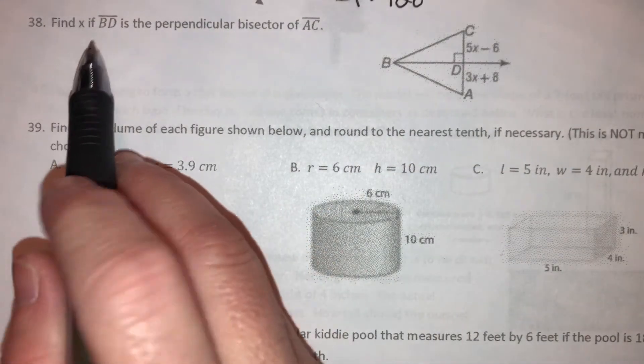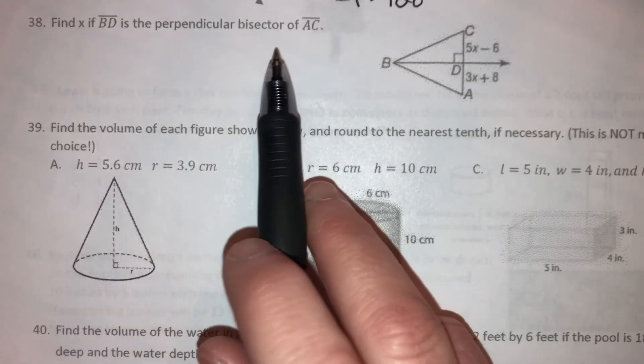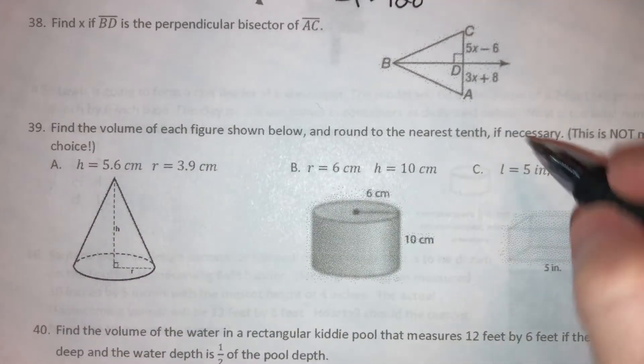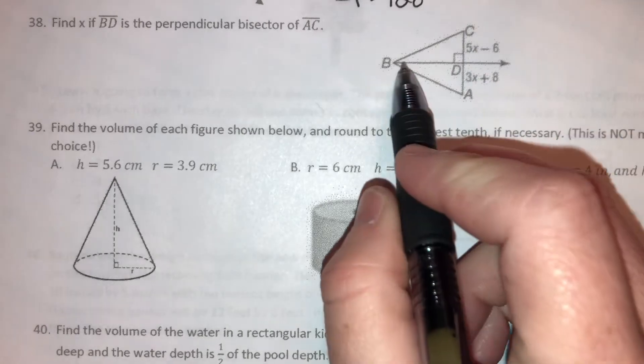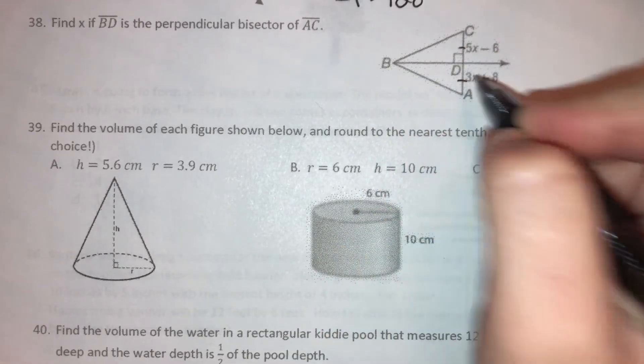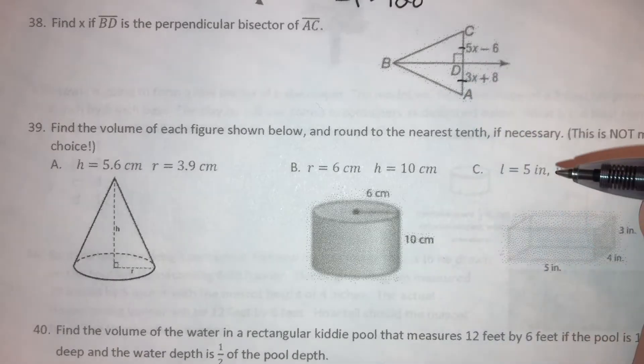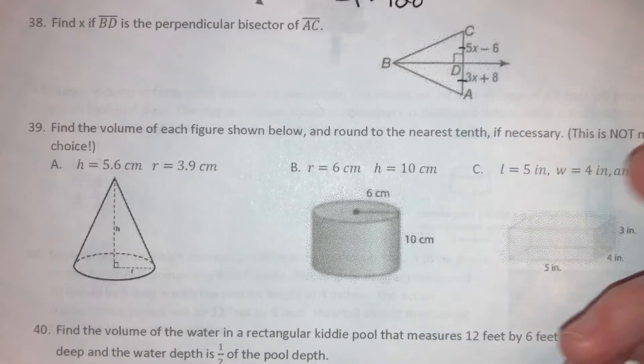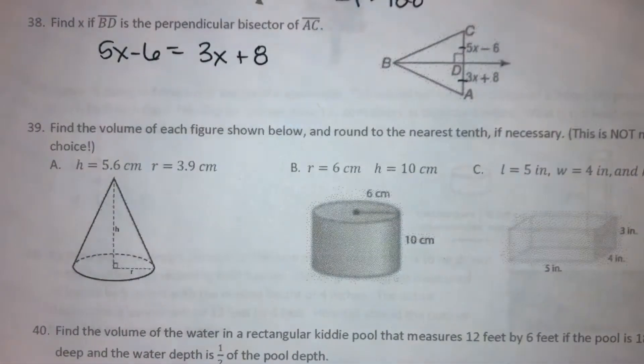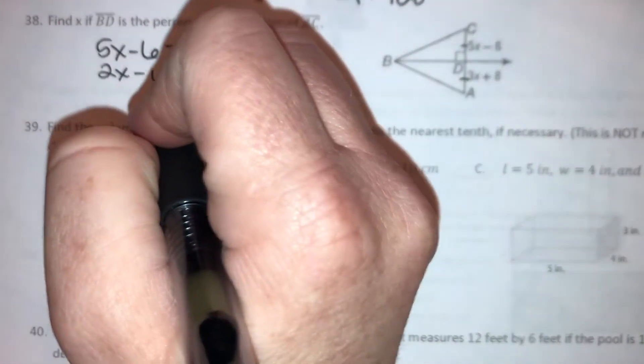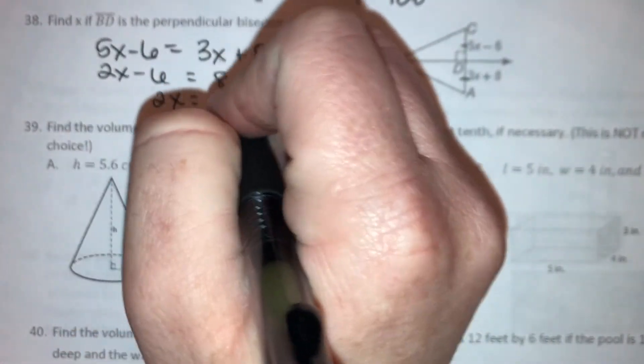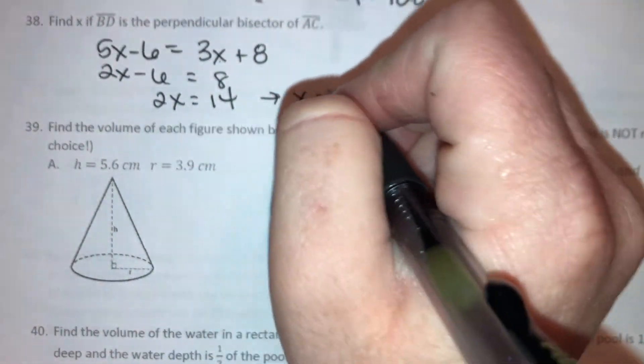Okay, number 38, find X if line segment BD is the perpendicular bisector of AC. So here's AC. If this is the perpendicular bisector, it cuts this in half. So CD and DA are congruent to each other. We're looking for X, so we're gonna set these equal to each other. 5X minus 6 is equal to 3X plus 8. And then we get rid of the smallest X. Add 6 to both sides. Divide by 2 and we get X equals 7.